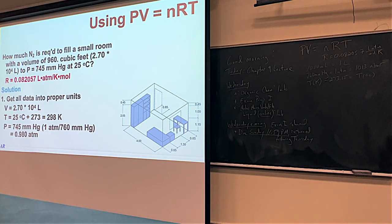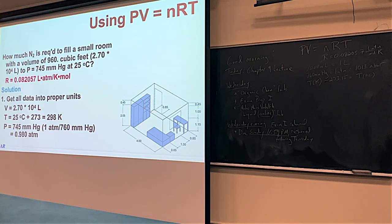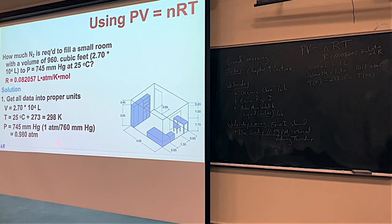In this problem, we have 745 millimeters of mercury divided by 760 millimeters of mercury per atmosphere, which comes out to 0.980 atmospheres. So with temperature in Kelvin, volume in liters, and pressure in atmospheres, we have everything we need to solve for the moles of gas.